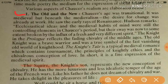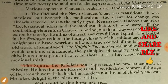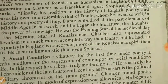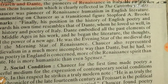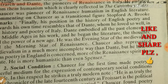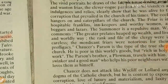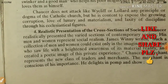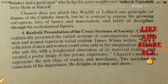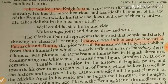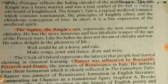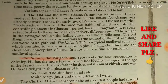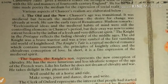We can talk about Chaucer's realism in detail under these headings: the Old and the New, social conditions — because if we don't know the social conditions of a particular age we cannot analyze the writings of that age — the Church and religious life, realistic representation, and the cross-section of society. As we know, Chaucer was a man of affairs who traveled a lot and knew the condition of people and society very well.